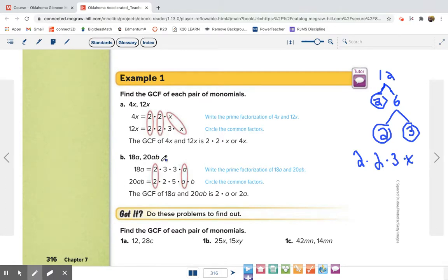So now looking at example B, we have 18a and 20ab. So 18a, since that's even, I'm going to start out with 2. That's 2 times 9. 9 is not prime. It can be broken down into 3 times 3. So 18 is 2 times 3 times 3.